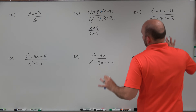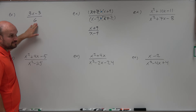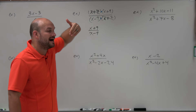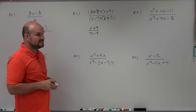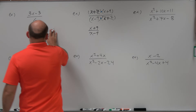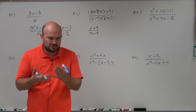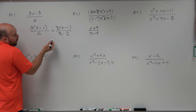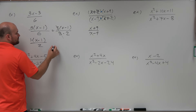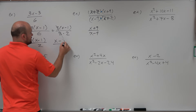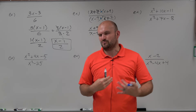For the next example, the terms are not separated by multiplication, so we need to factor them. In the numerator, I can factor out the GCF, which is 3, giving 3 times x minus 1 divided by 6. We can rewrite 6 as 3 times 2, and since 3 over 3 equals 1, we're left with x minus 1 over 2. Our final answer is x minus 1 over 2.